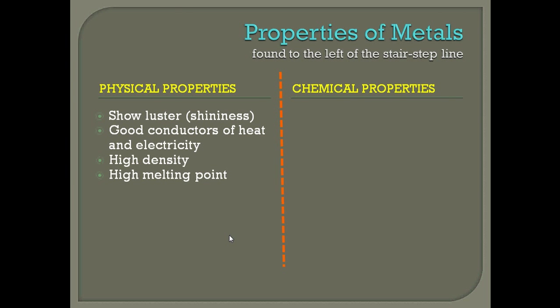Metals are also going to have a high melting point. For example, aluminum has a melting point of about 1,200 degrees Fahrenheit, and silver melts at about 1,762 degrees Fahrenheit. If you compare that to water, which stays solid as ice until 32 degrees Fahrenheit, metals require much higher temperatures — into the thousands of degrees Fahrenheit — before they melt.